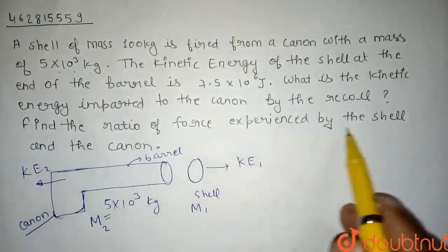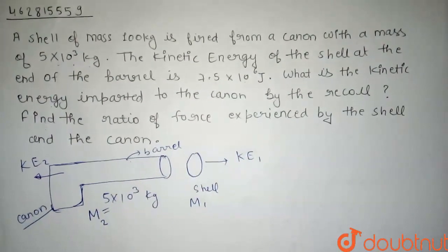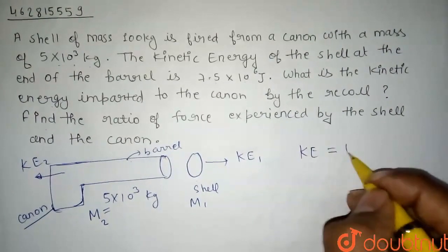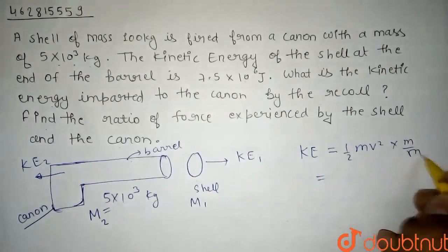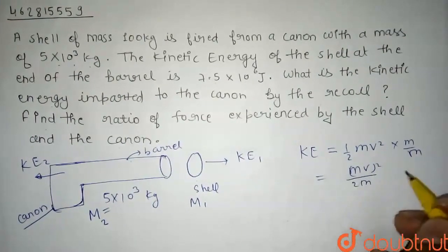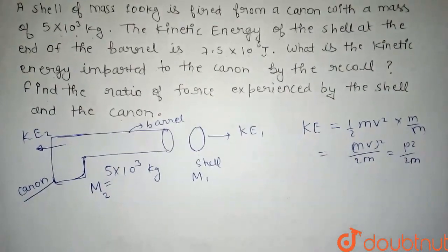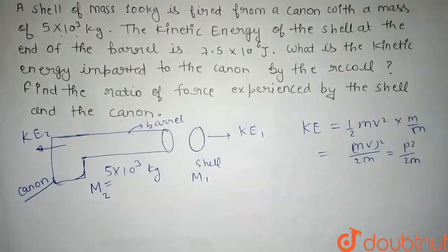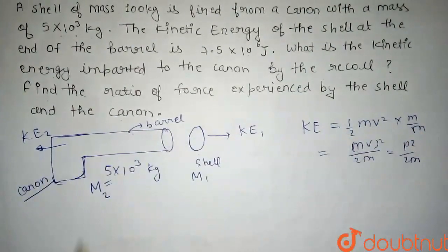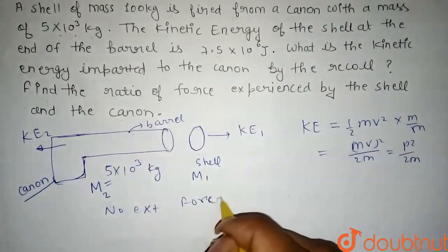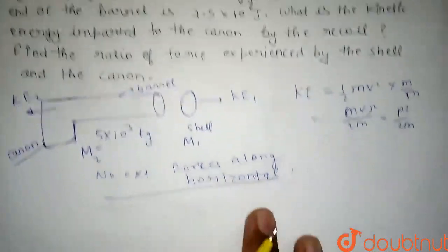We need to find the force exerted by the shell and the cannon, so we can find the ratio of forces. We can find kinetic energy as KE = p²/2m, where p is momentum and m is mass. Since there is no external force on the cannon-shell system, and no external forces along the horizontal, we apply conservation of momentum.